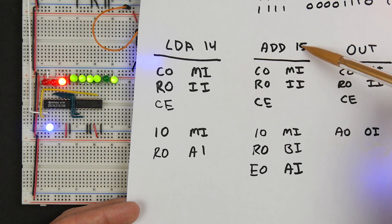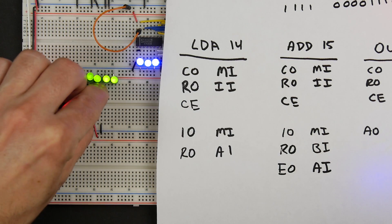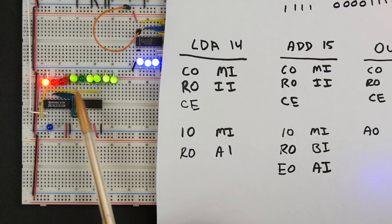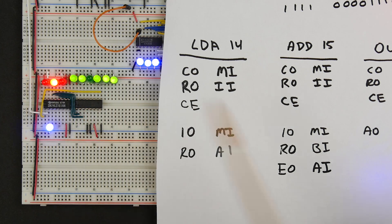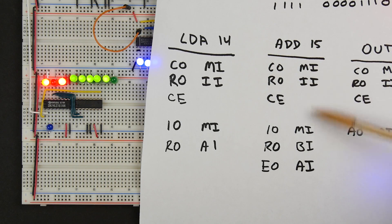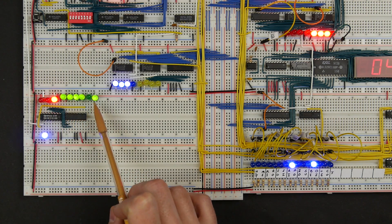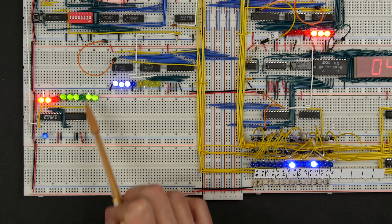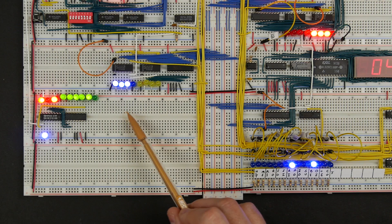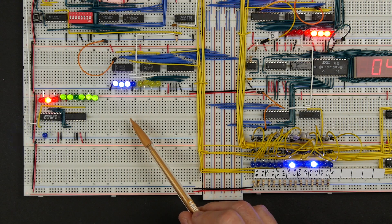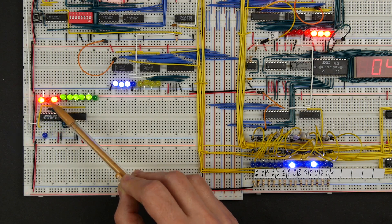Since ADD has six steps (1 through 6), connecting the reset to output 5 doesn't work. If I move the reset wire to the next decoder output instead, the counter now cycles through 0 to 5 — six steps — which is the maximum we'll need for any instruction I'm planning to build. So now the combination of this counter (tracking which part of the instruction cycle we're on) plus the instruction register (holding the current instruction) gives us all the information needed to properly set the control word bits.